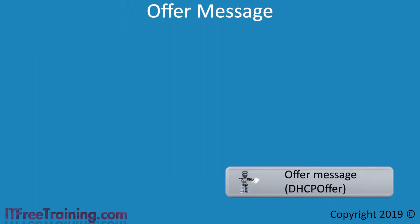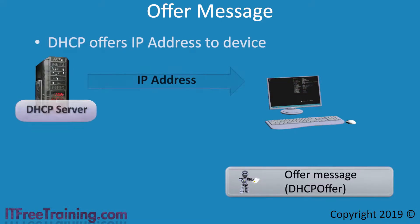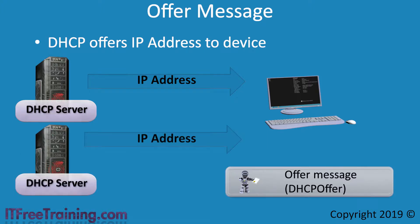The next message is the Offer message. This is where the DHCP server offers an IP address to the device. Remember, the Discover message was a broadcast, so it is possible for multiple DHCP servers to respond to the same device. The Offer message may be a unicast or a broadcast — the device can request either, but the choice is ultimately made by the DHCP server.